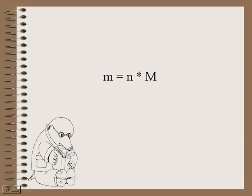Mathematically, we can express this idea using the equation m = n × M. In this equation, the mass in grams is equal to the number of moles times the mass per mole, or the molar mass.